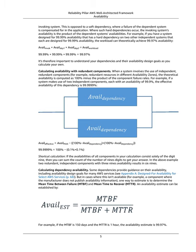When a system involves the use of independent, redundant components — for example, redundant resources in different availability zones — the theoretical availability is computed as 100% minus the product of the component failure rates. For example, if a system makes use of two independent components each with an availability of 99.9%, the effective availability of this dependency is 99.9999%. Shortcut calculation: if the availabilities of all components consist solely of the digit 9, you can sum the count of the number of 9-digits to get your answer. Two redundant, independent components with three 9s availability results in six 9s.